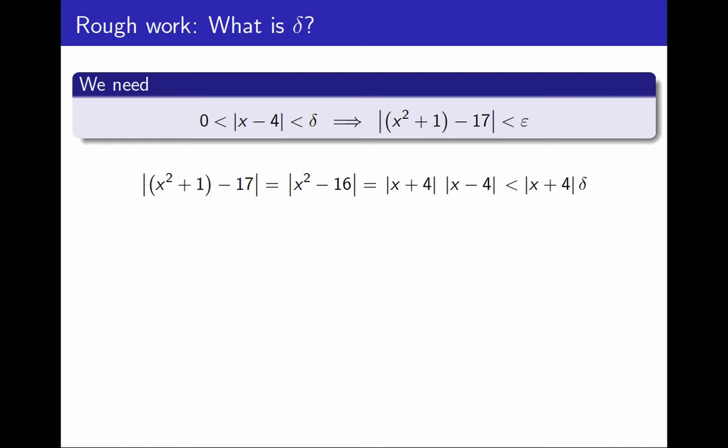So perhaps I may be tempted to take δ as ε over the absolute value of x plus 4. This is a bad idea. This doesn't work. This is very wrong. But I mention it because this is a common error that I have seen often in students' papers, so I want to explain why it's a bad idea.